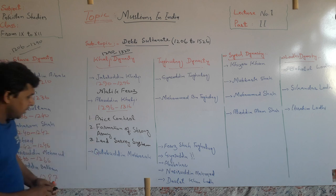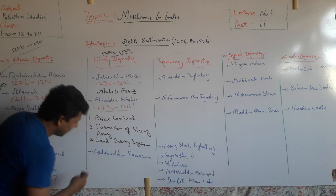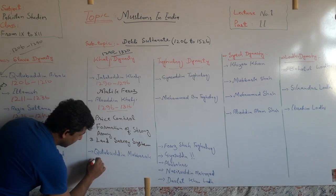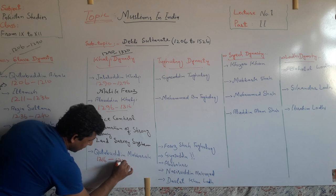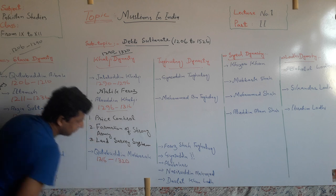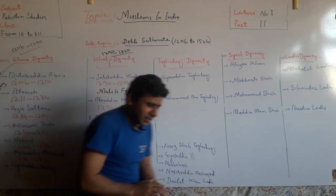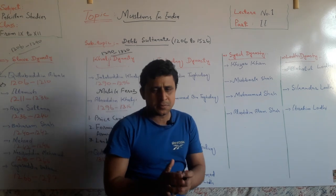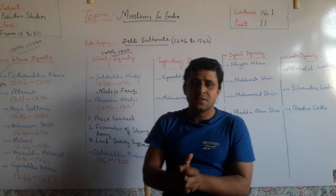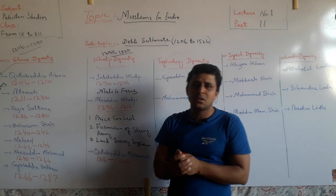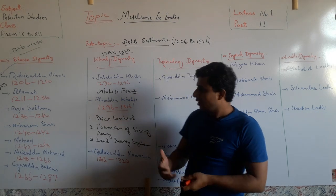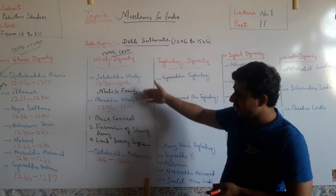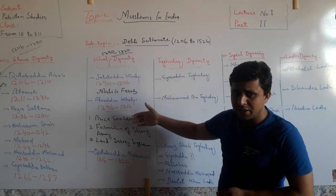The last ruler of the Khilji dynasty ruled from 1316 to 1320. But he was an inexperienced ruler and could not continue his government, and in this way the Khilji dynasty ended.